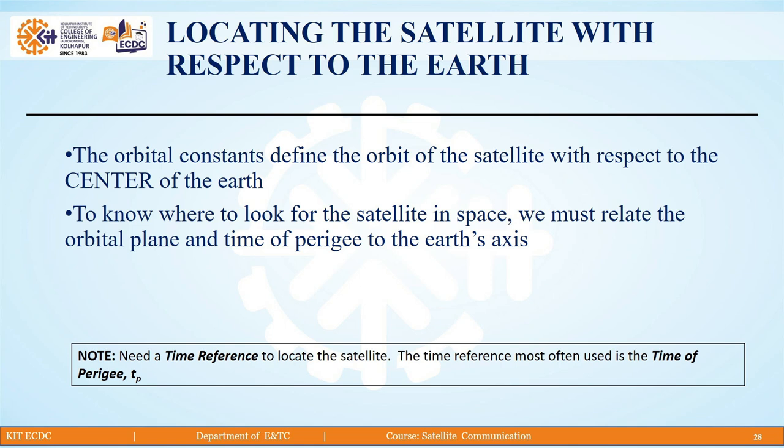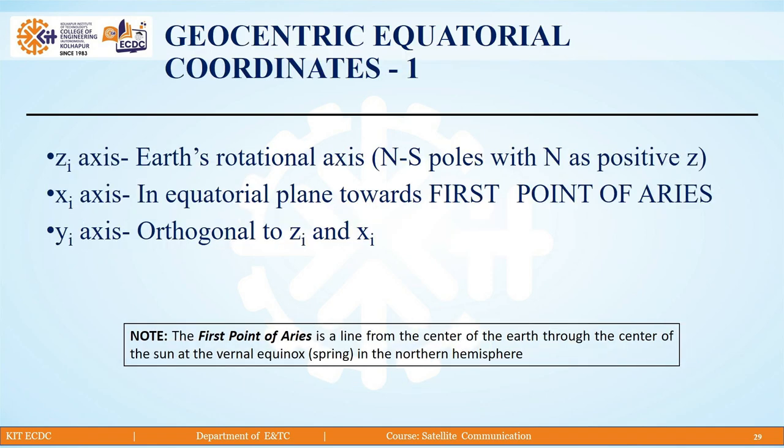We need a time reference to locate the satellite. The time reference most often used is the time of perigee tp. We also need to consider the geocentric equatorial coordinate system. Here we have 3 axes: the zi axis, which is the earth's rotational axis, the xi axis in the equatorial plane towards the first point of Aries, and the yi axis orthogonal to zi and xi.